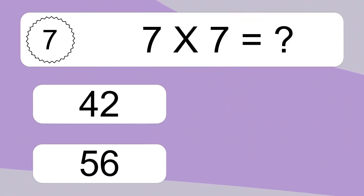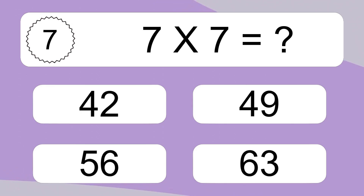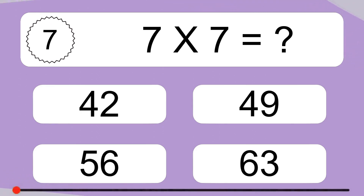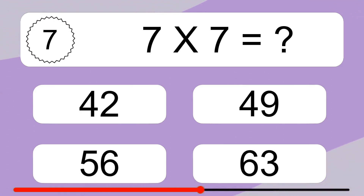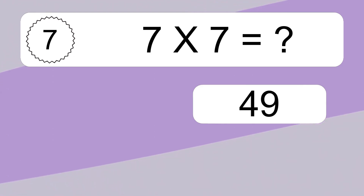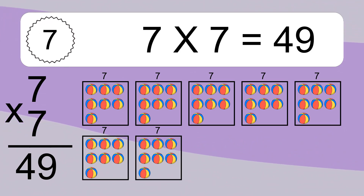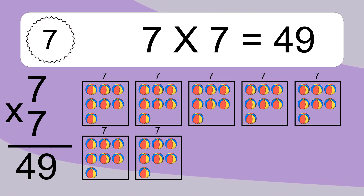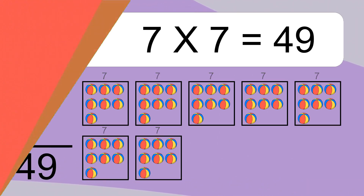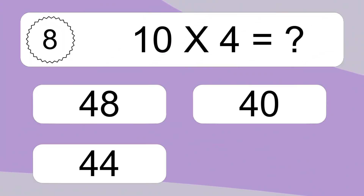7 times 7 equals what? 7 times 7 equals 49. We have 7 boxes, and each box has 7 colorful balls inside. If you count all the balls in all the boxes together, you will have 7 times 7 balls. This equals 49 balls.